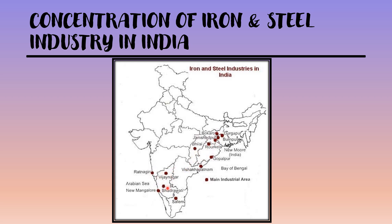Here also we find that iron and steel industries have developed in areas where raw materials are found in abundance, because this helps in cutting down transportation costs and that reduces the price of production.